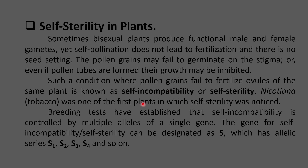This trait of self-sterility was first reported in the plant Nicotiana, which is a tobacco plant. Breeding tests have established that self-incompatibility is controlled by multiple alleles of a single gene, and so this can be studied under multiple allelism. The gene for self-incompatibility can be designated as S, which has an allelic series: S1, S2, S3, S4, and so on.